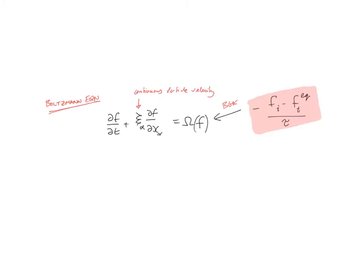We define the BGK collision operator as the difference between the population function and its equilibrium value, f equilibrium, divided by the timescale tau.